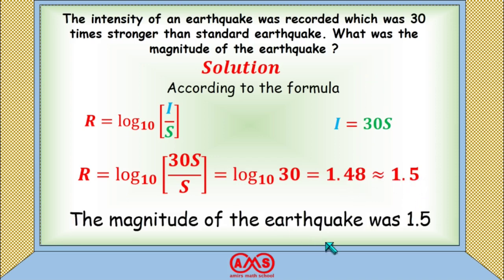In this case, the magnitude of the earthquake is 1.5. That is, if the intensity of an earthquake is 30 times stronger than the standard earthquake, its value on the Richter scale will be 1.5.